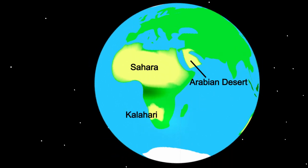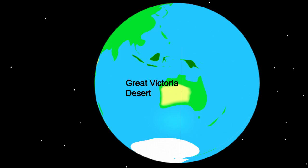Some examples of these deserts are the Sahara, the Kalahari, the Arabian Desert and the Great Victoria Desert.